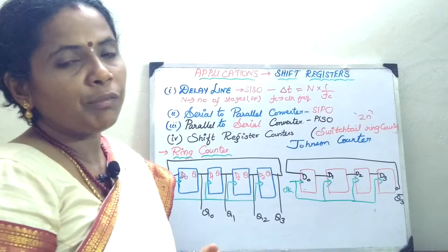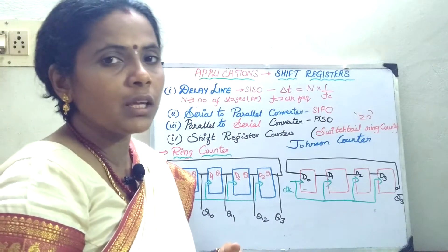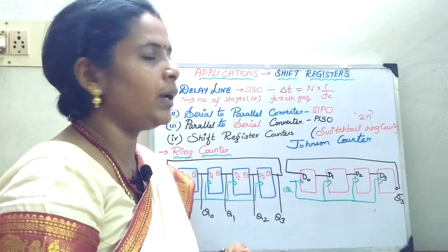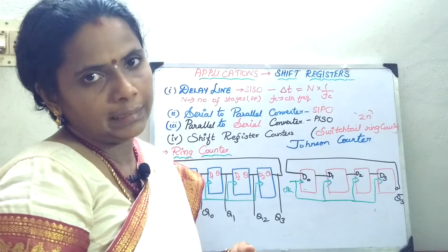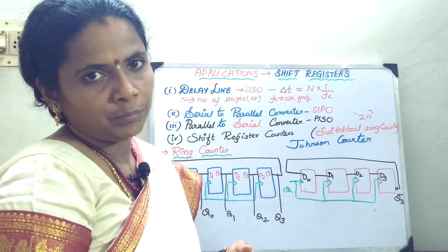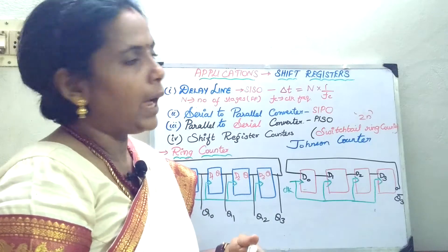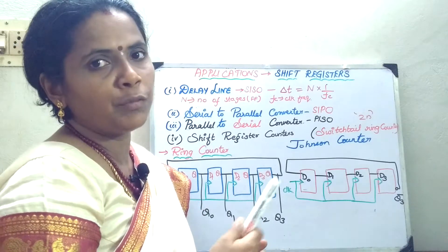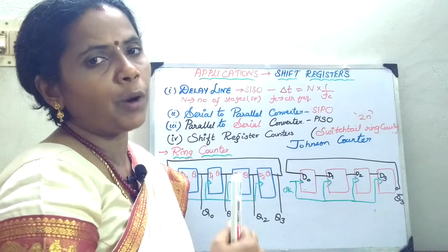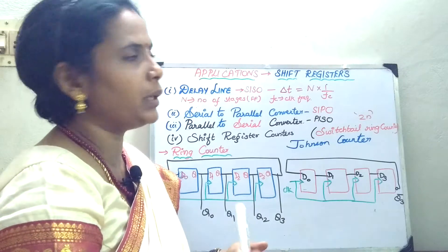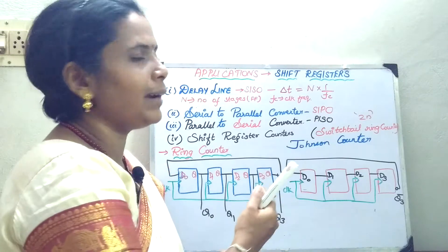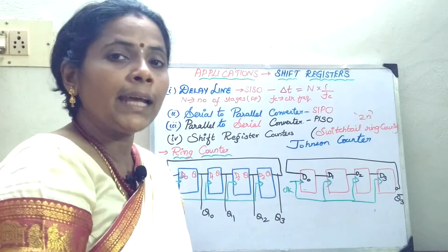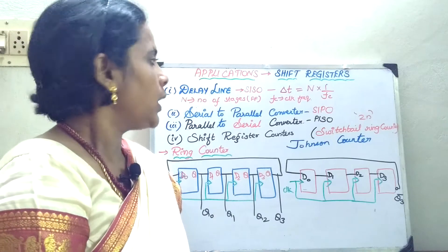If I am going to decrease the clock frequency, I can increase my del_t. And if I increase the number of flip-flops also, then the propagation delay will increase and ultimately del_t, that is the time delay, will get increased.